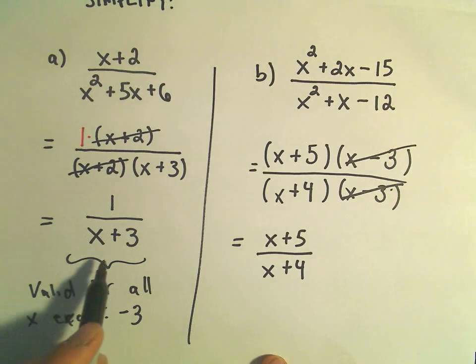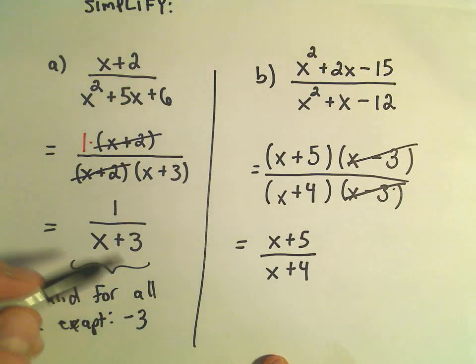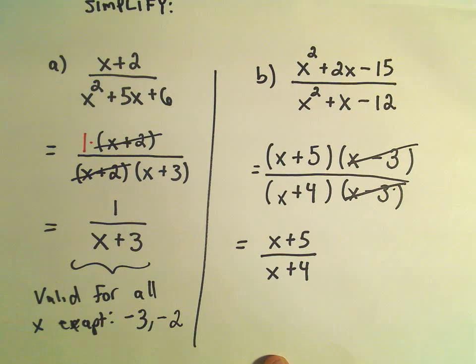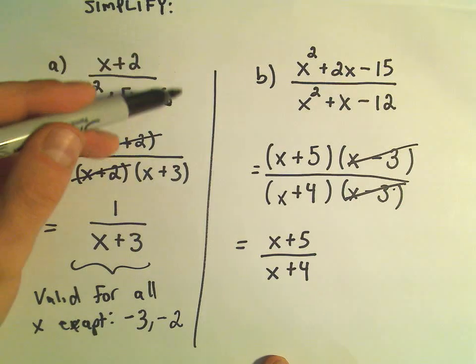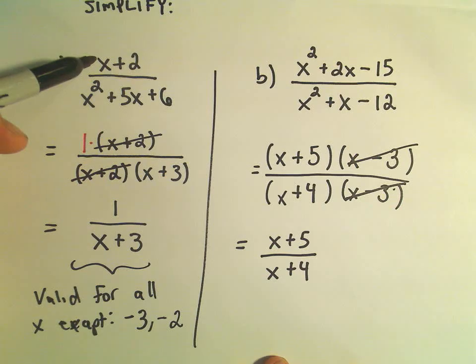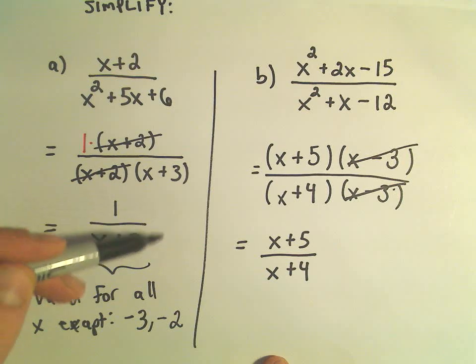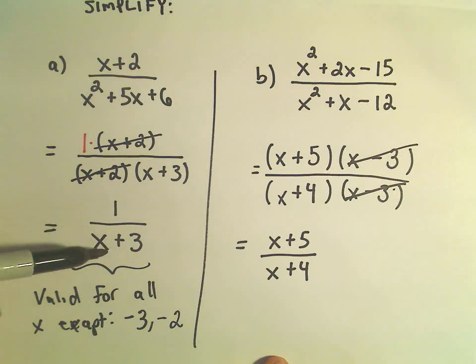Certainly we can't use negative 3 because that makes the denominator 0, which is undefined. We also have to leave out negative 2 because notice if we plug negative 2 into the original rational expression, we would end up with a 0 in the denominator. If we plug negative 2 into the simplified expression, we would have 1 over 1.